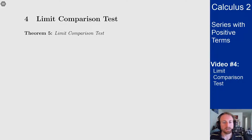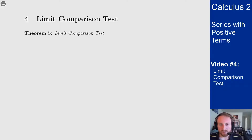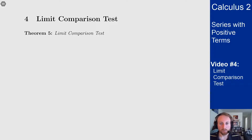In this video, we'll talk about the limit comparison test, which is another method to figure out if a series converges or diverges. With this test, we're doing a comparison again, but it's not quite as obvious as the direct comparison test from before. The idea is I want to find a series to compare things to, but instead of looking for something that's bigger or smaller, I'm looking for a series that behaves about the same as the one I'm working with.